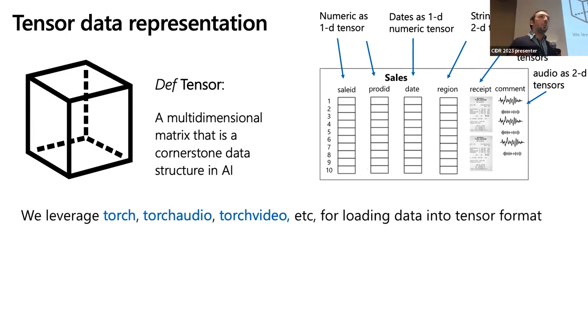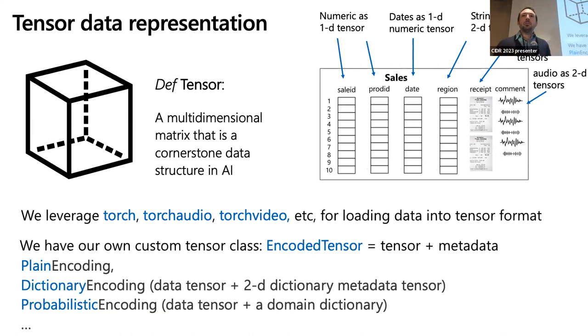So in our system, what we do, we basically leverage TorchAudio, TorchVideo to load all the different modalities into tensor representation. And since our query system and the query runtime is based on the tensor representation, we can basically run queries evenly over all these modalities. What we did is we subclass the tensor in PyTorch. We have what is called the encoded tensor, because we want to kind of get close a little bit to columnar databases. We tried to use lightweight encoding, like dictionary encoding, run-length encoding, bit packing, et cetera. We added this probabilistic encoding tensor, and I will explain a little bit in a moment how it works, but it's basically the type of encoding that allows us to go from images to some structural representation that you can feed into a SQL query.